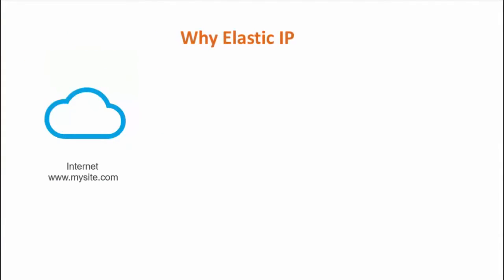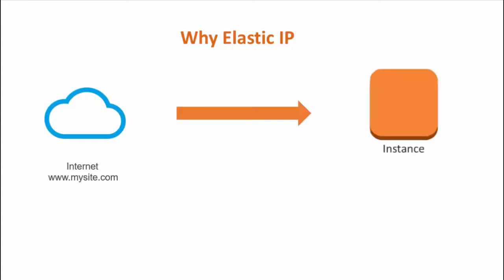So why exactly do you need an Elastic IP? There are many reasons why you need a static IP for your domain, but let's take one classic example. Let's say that you have a site called mysci.com and this points to an instance in your AWS domain which has a public IP. Now everything works perfectly well. What happens if your instance is restarted? When your instance is restarted, AWS takes another public IP from its pool and assigns it to your instance.